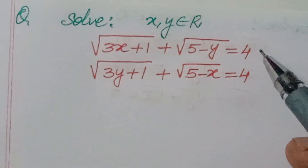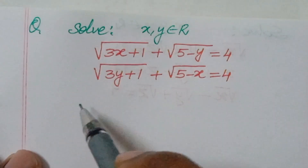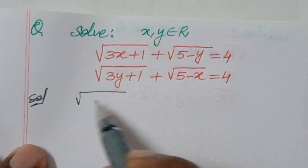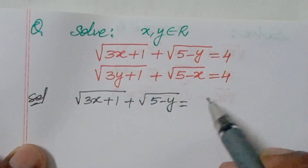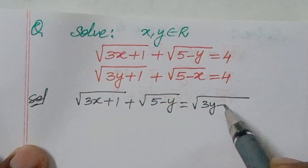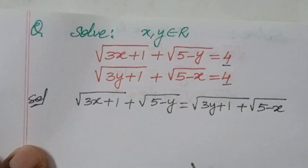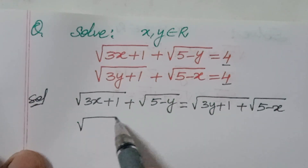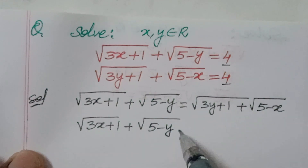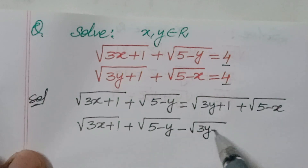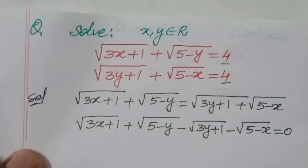Both equations are given the same value, so we can make them equal. Sending all terms to one side: root of (3x + 1) plus root of (5 - y) minus root of (3y + 1) minus root of (5 - x) equals 0.